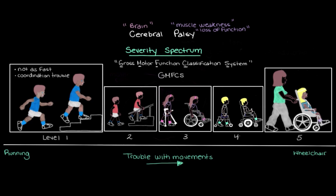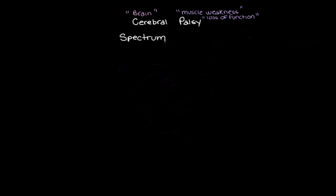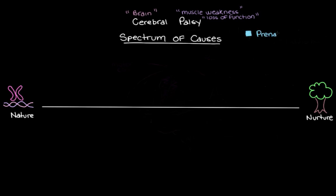Let's go back to those damaging events — the events that damage the movement centers during development and cause cerebral palsy. We'll make a spectrum of causes, going from nature on one end to nurture on the other. Nature refers to things we're born with, like our genes or chromosomes, and nurture refers to our environment after birth and our personal experiences. Different causes of cerebral palsy can happen at different periods of early development, so we'll color-code them: blue for prenatal events, green for perinatal events during the birth process, and salmon for postnatal events up to the first few years of life.